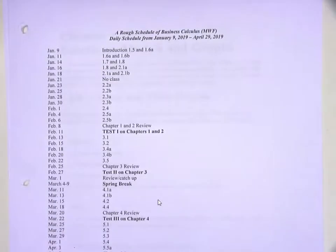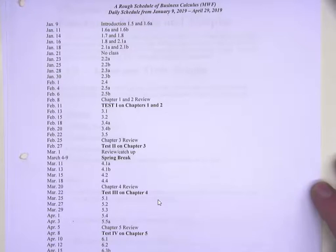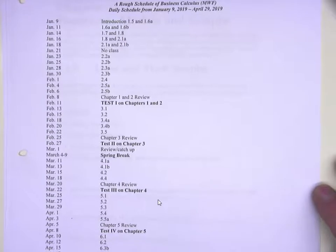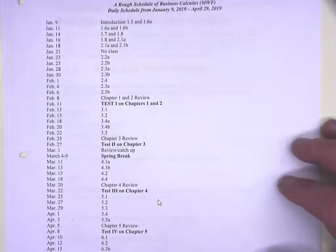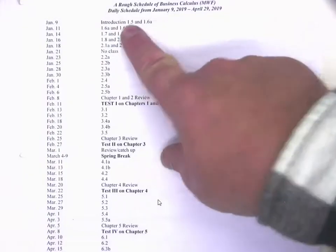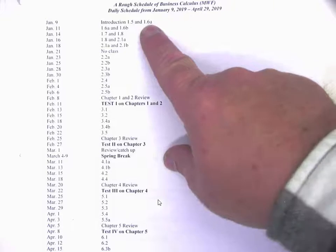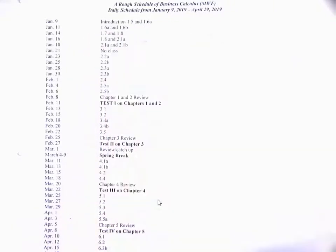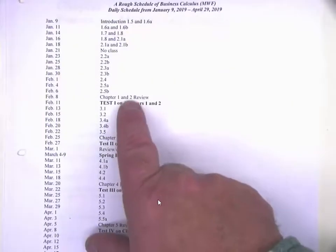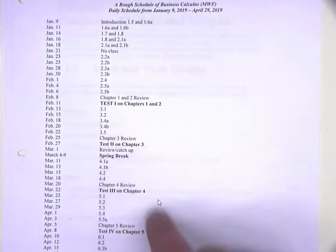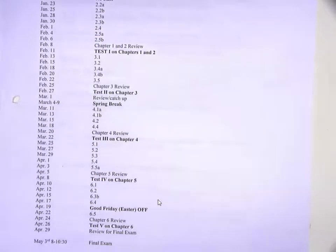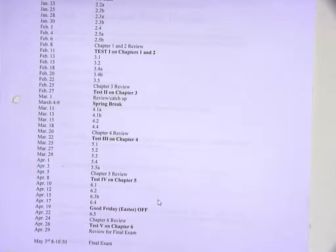The last thing on the syllabus is a day-by-day description of what I'm going to be covering — the key word is tentative. My goal is to lay out what I'm covering each day. Today I'm supposed to be introducing myself and going over Sections 5.1 and 6.1A, but I may push 6.1A to the next day. Some days I may slow down to make sure you're understanding stuff, and some days I may speed up because you've got it down. It's a very tentative schedule.